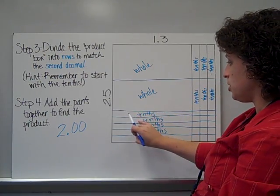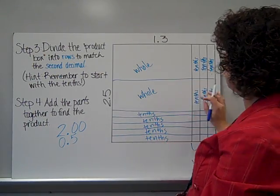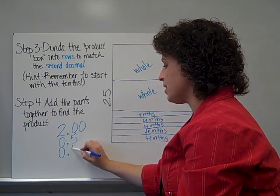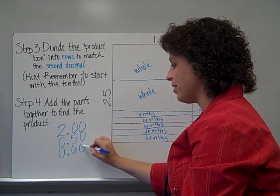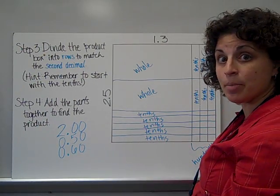I can add these tenths, 1, 2, 3, 4, 5 tenths, write that down, and then add these tenths, 1, 2, 3, 4, 5, 6 tenths, and write that down. And again, I'm going to go ahead and add the 0 in this hundredths place, because I'm getting ready to have to add some hundredths.